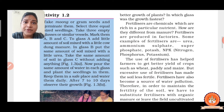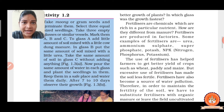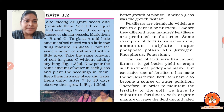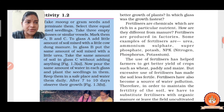How are fertilizers different from manure? The fertilizer is manmade but the manure is natural. Fertilizers are produced in factories but manure is prepared in the field.